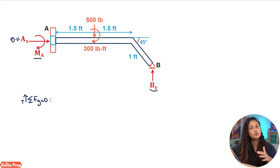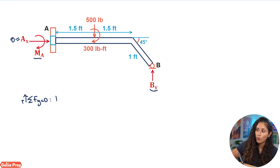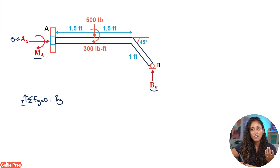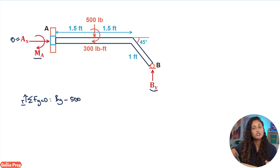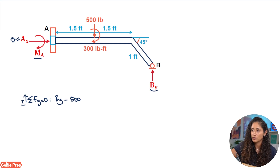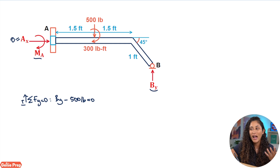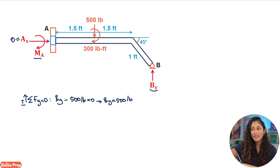In the Y direction, the only two forces we have are 500 lbs and By. By is positive because it's going in the same direction as our sign convention, and minus 500 because the 500 lb force is going down. Setting this equal to zero gives us By = 500 pounds.